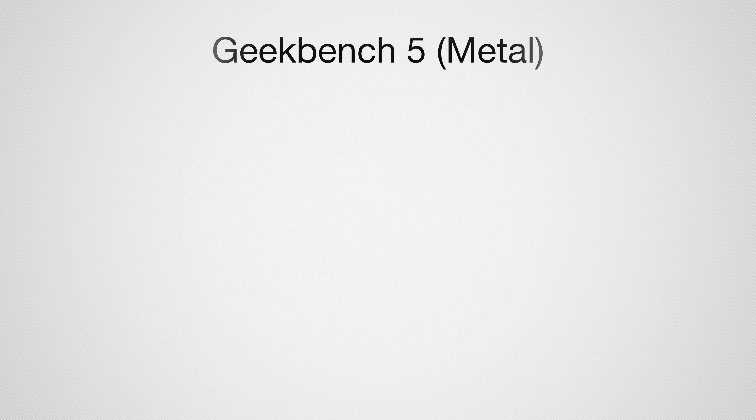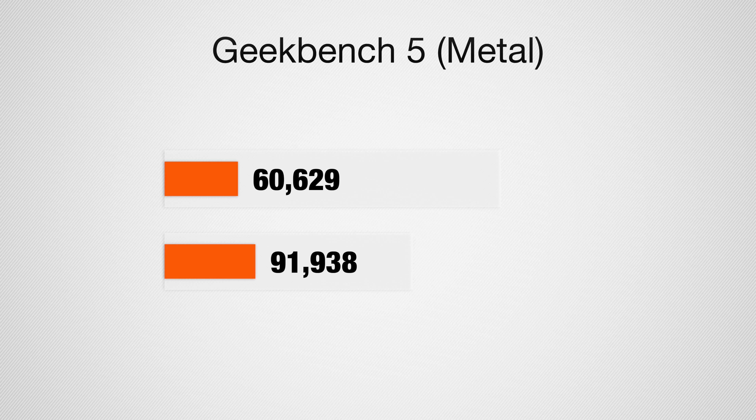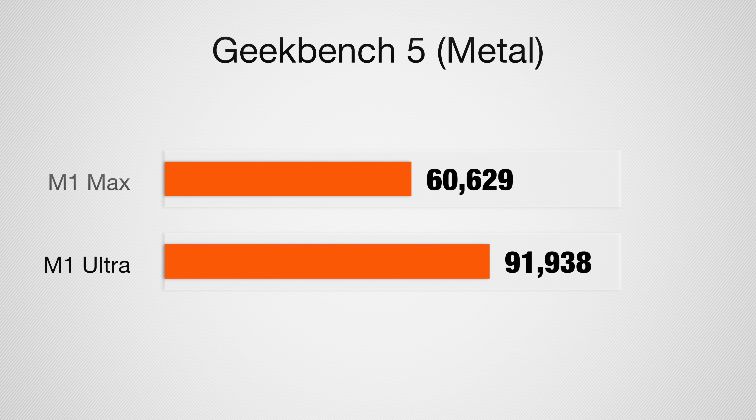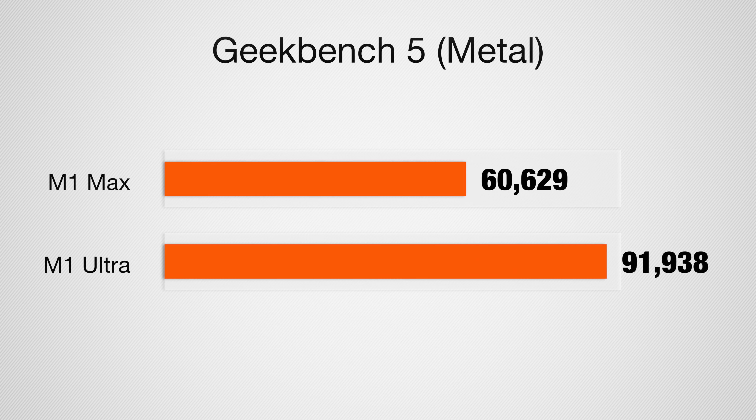Looking at graphics further, we have the Geekbench Compute Graphics under Metal, which got us 60,629 for the M1 Max compared to 91,938 for the M1 Ultra. It's neat that we saw very similar percentage gains on both the Affinity GPU test and the Geekbench Graphics GPU test.